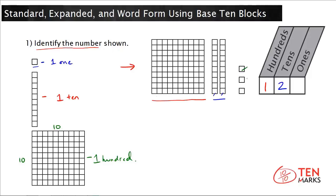There are 1, 2, 3 ones, which means you put the digit 3 in the ones column here. When you take this all together, you get the number 123.